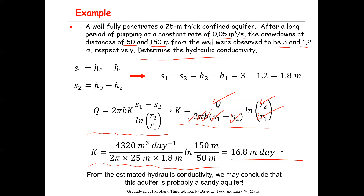Just to highlight: s₁ − s₂ = 3 − 1.2 = 1.8 m, which equals h₂ − h₁. The hydraulic conductivity has been calculated as 16.8 m/day. From this relatively high value, one can conclude that this aquifer is probably a sandy aquifer, which is why the hydraulic conductivity is that high.